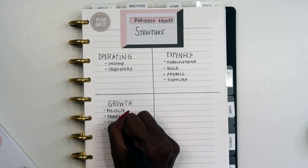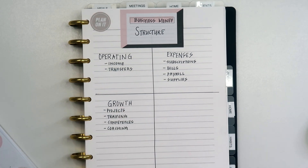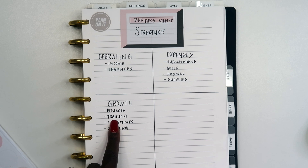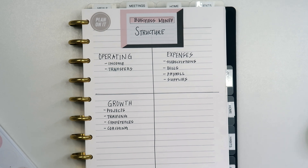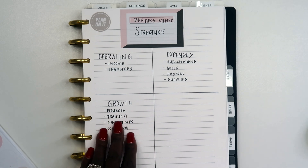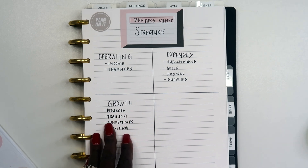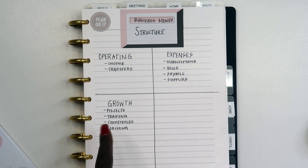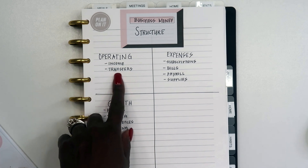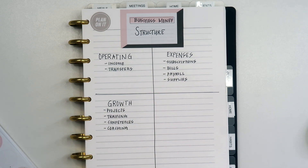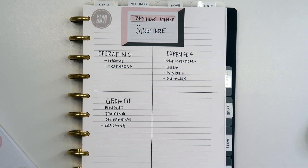The third account is the growth account — another business checking account. In the growth account we have any upcoming projects, things outside of what we're normally doing within our business. This would be upcoming projects I want to complete, training that's going to help me grow my business, conferences I want to attend, or any coaching I feel I might need. Having a growth account allows me to save money for anything that helps me grow, so I'm not stuck just using money for expenses and payroll.